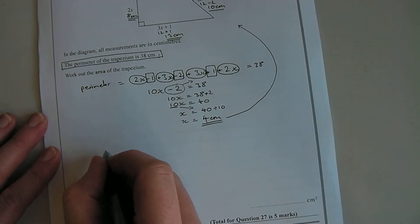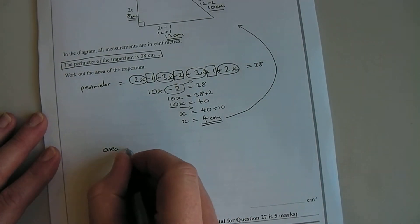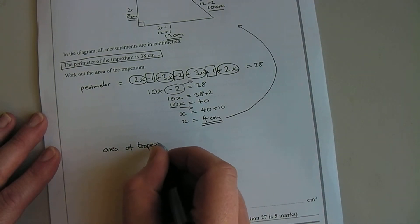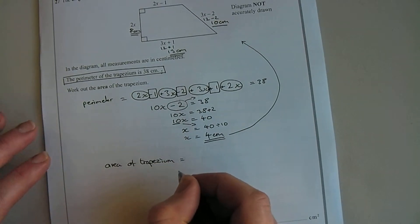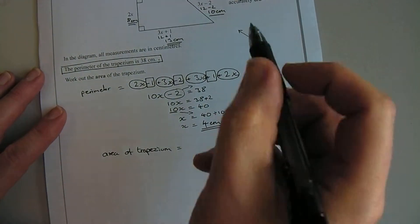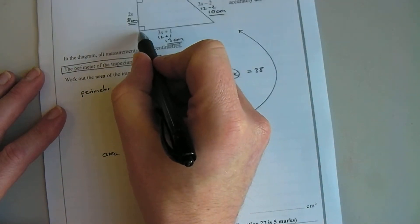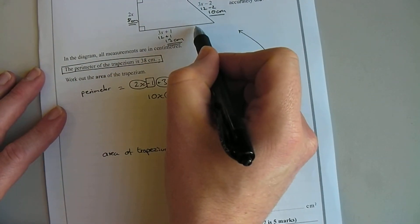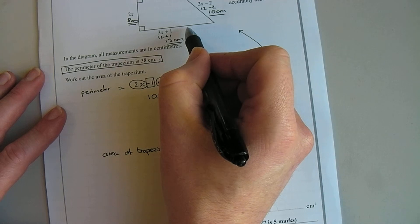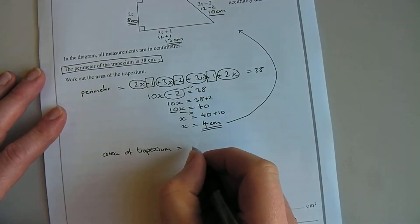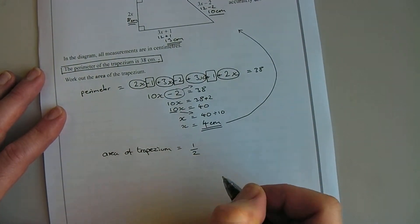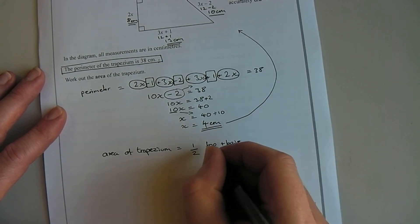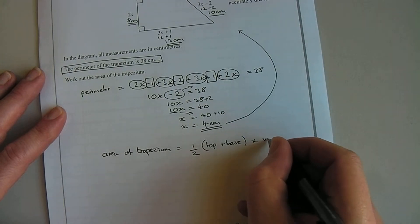So now I'm going to put down the area of a trapezium. So the area of a trapezium, and again this is on your formula sheet you can look this up, it's half of the top and the bottom, half of those two lengths added together times by the vertical height. So I'm looking at half of the top add the base, and then I times by the vertical height.